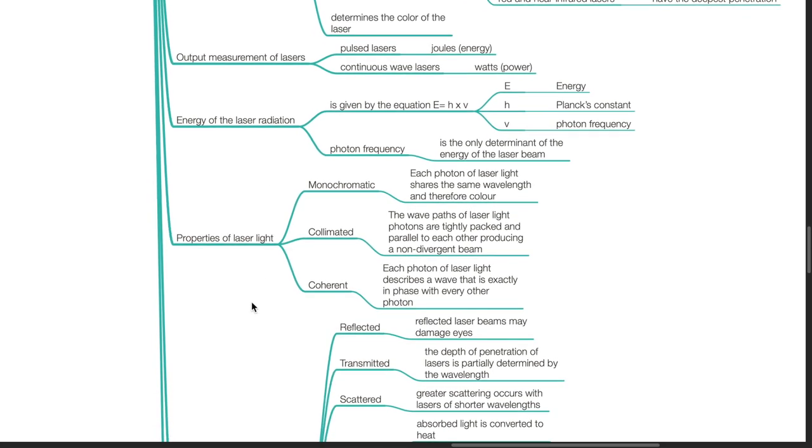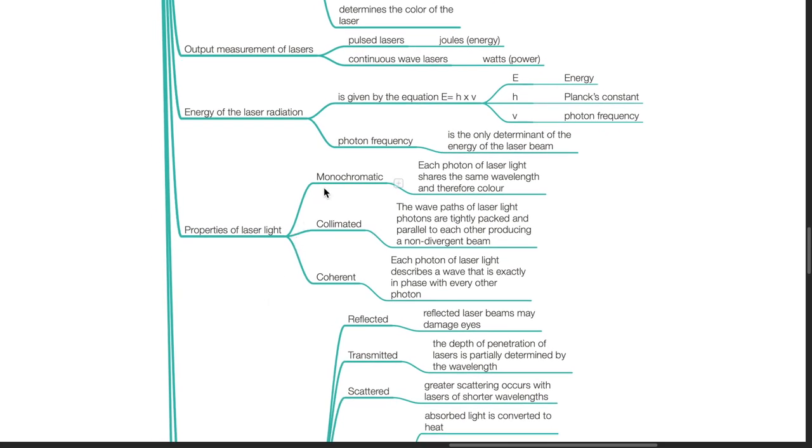Properties of laser light: Monochromatic, collimated, and coherent. Monochromatic means that each photon of laser light shares the same wavelength and therefore color. Collimated means the wave path of laser light photons are tightly packed and parallel to each other producing a non-divergent beam. Coherent means that each photon of laser light describes a wave that is exactly in phase with every other photon.